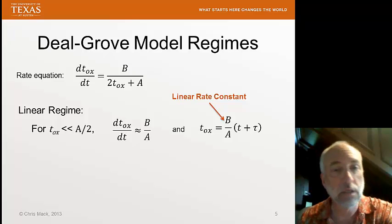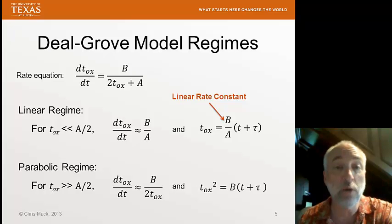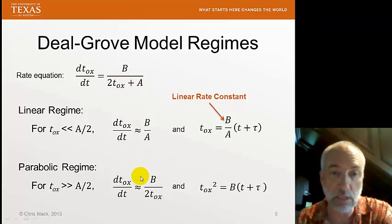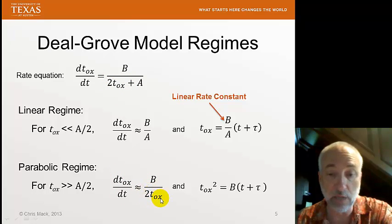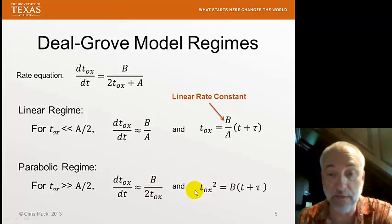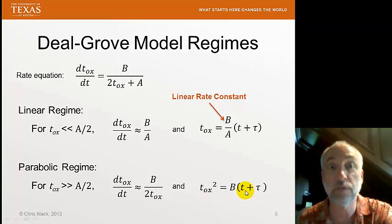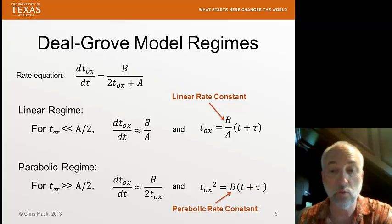For thick oxides where T-ox is much greater than A over 2, we enter the parabolic regime. In that case, A can be neglected, and the rate becomes B over 2 times T-ox. Solving that gives a second-order equation: T-ox squared is linear with time, or thickness goes as the square root of oxidation time. We call this the parabolic regime, with parabolic rate constant B. It's very common to refer to the parabolic rate constant B and the linear rate constant B over A.